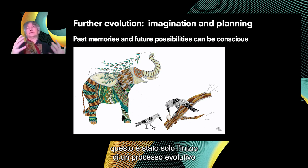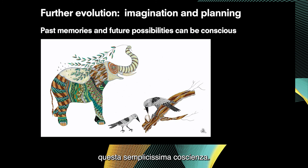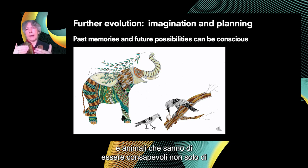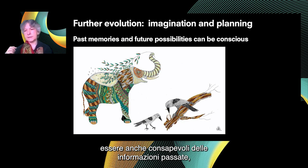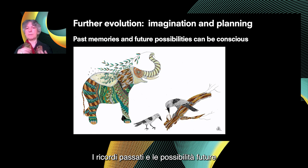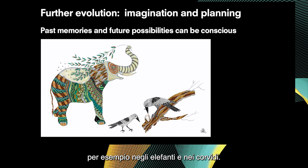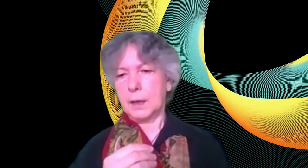It is important to remember that although we're talking about the origins of simple consciousness, this was just the beginning of an evolutionary process that went on. Consciousness and learning became more complex during evolution. Animals evolved that are conscious not only of present information, but also of past memories and future states of the world — virtual realities. This is the evolution of imagination and planning. Past memories and future possibilities became conscious in some animals, for example in elephants and corvids. Finally, we reach the human species, where we have reflective consciousness: the ability not only to imagine and plan, but to communicate about the products of our imagination, share them, analyze them, rationalize them, and categorize them. Thank you very much.